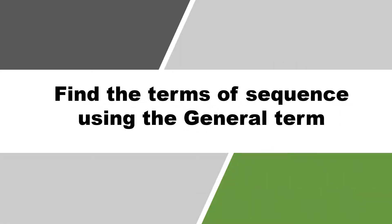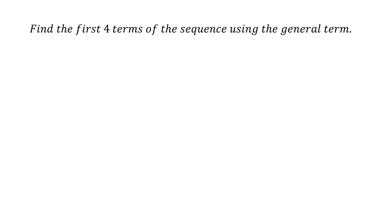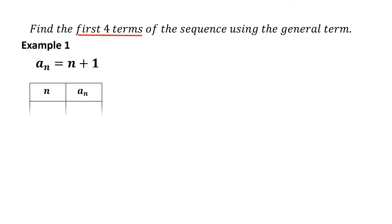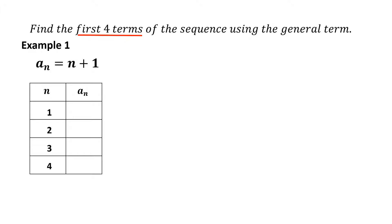We will find the first four terms of a sequence using the general term. Finding the sequence is done by substituting the assigned values of n into the given general term. We will assign values of n from 1 to 4.